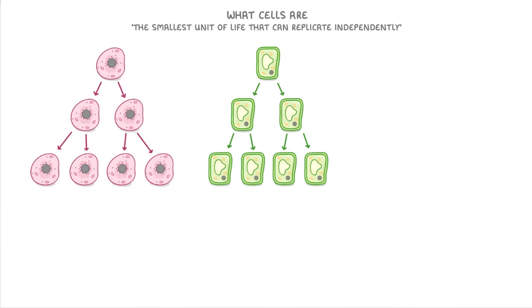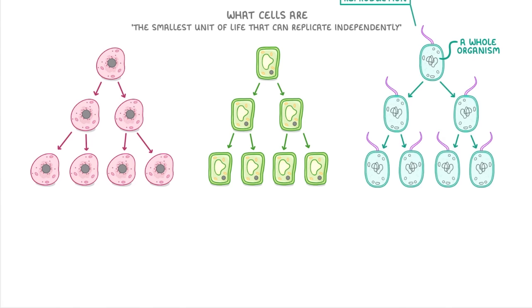In some cases though, like for bacteria, each individual cell is a whole organism. So when they divide like this, they're also reproducing, because every division produces a whole new organism.